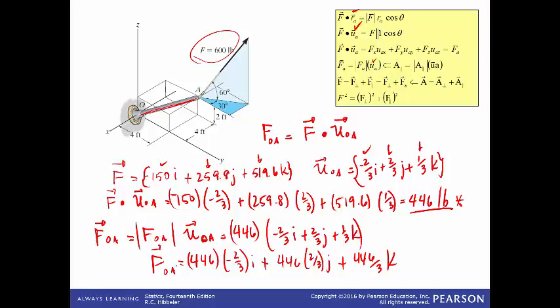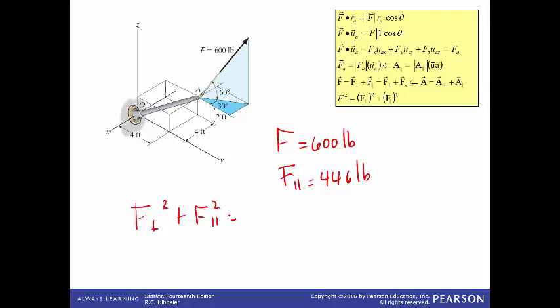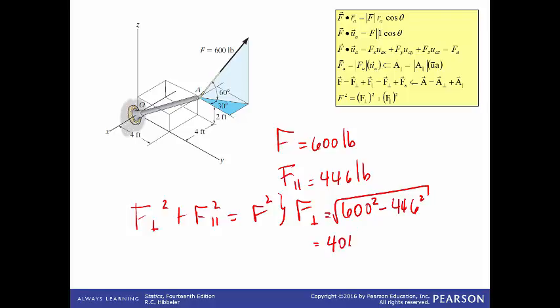Finally, let's find the perpendicular component of F. The total force is 600 pounds and the parallel component is 446 pounds. Using the Pythagorean relationship, the perpendicular component squared plus the parallel component squared equals F squared. So the perpendicular component equals the square root of 600² minus 446², which is approximately 401 pounds. I hope this helps in understanding the problem better. Remember to pause and understand everything.